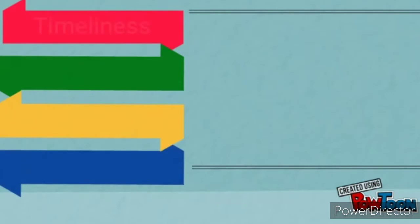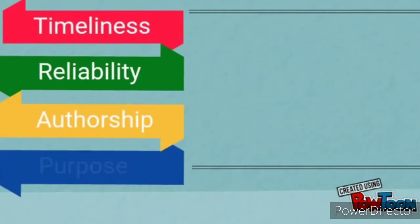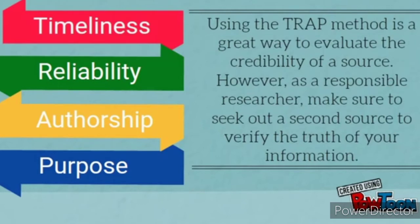So there you have it: Timeliness, Reliability, Authorship, and Purpose. Using the TRAP method is a great way to evaluate the credibility of a source. However, as a responsible researcher, make sure to seek out a second source to verify the truth of your information. Even credible sources can make mistakes.